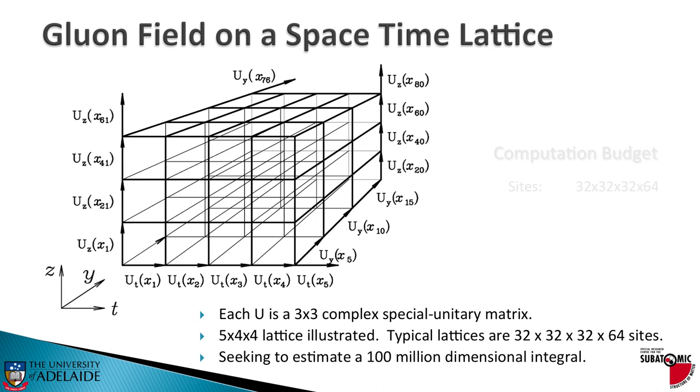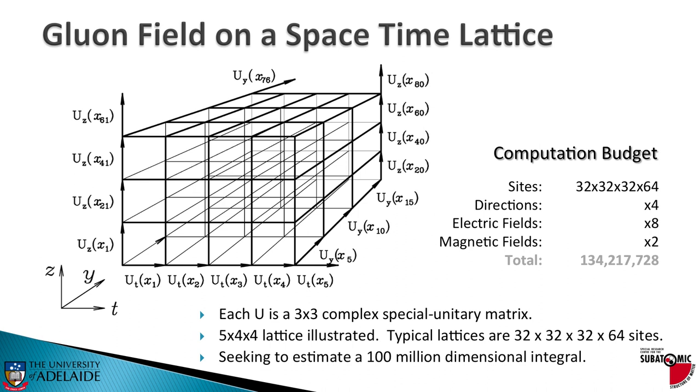Let's think about the computational budget associated with handling that kind of data. You've got that many sites that you need to look after. There's four directions for the vector field. There are eight electric fields, and there are another eight magnetic fields. Multiply it all out, and you're looking at 134 million degrees of freedom.